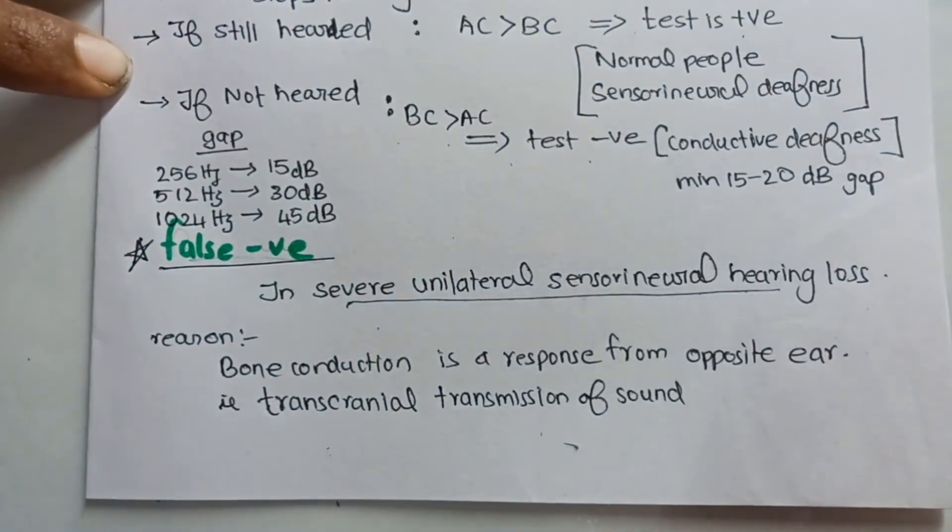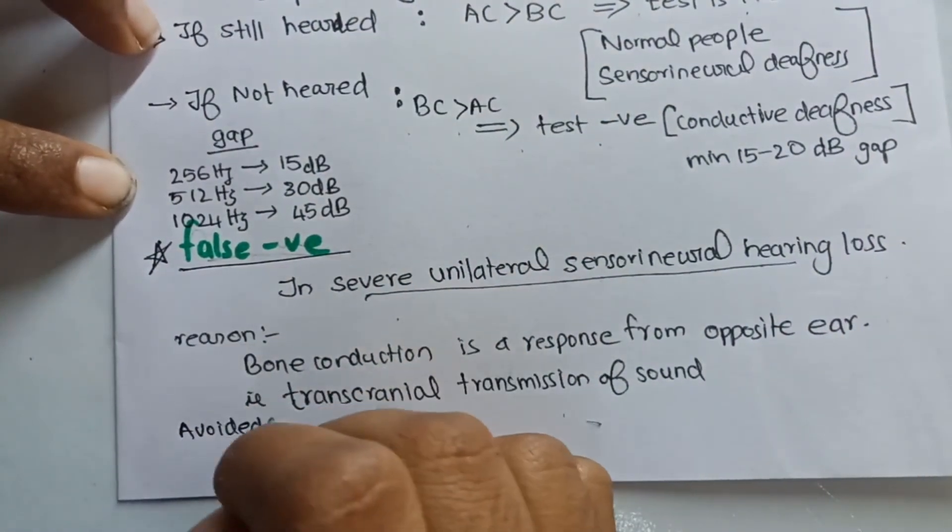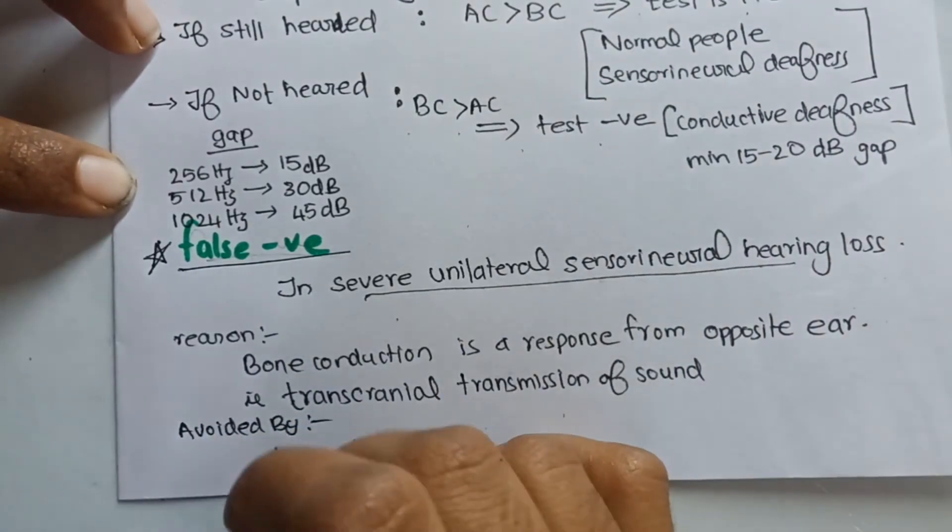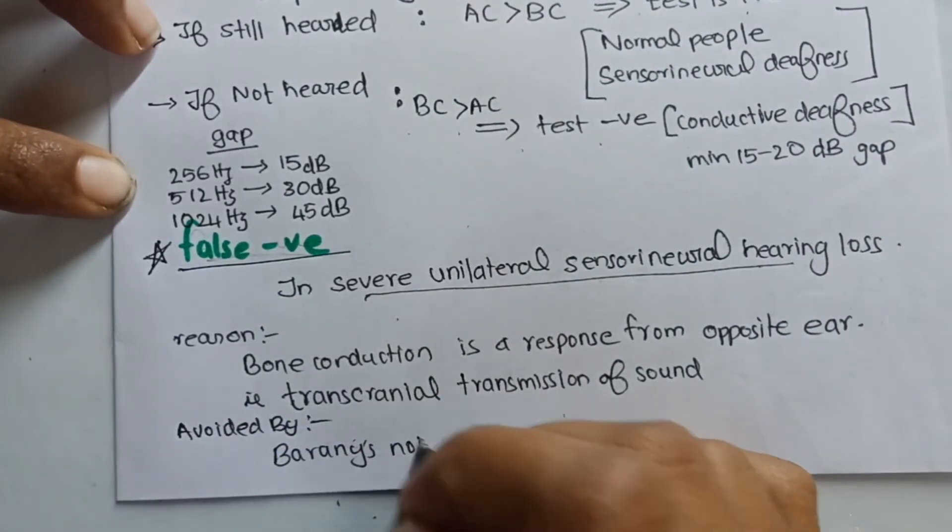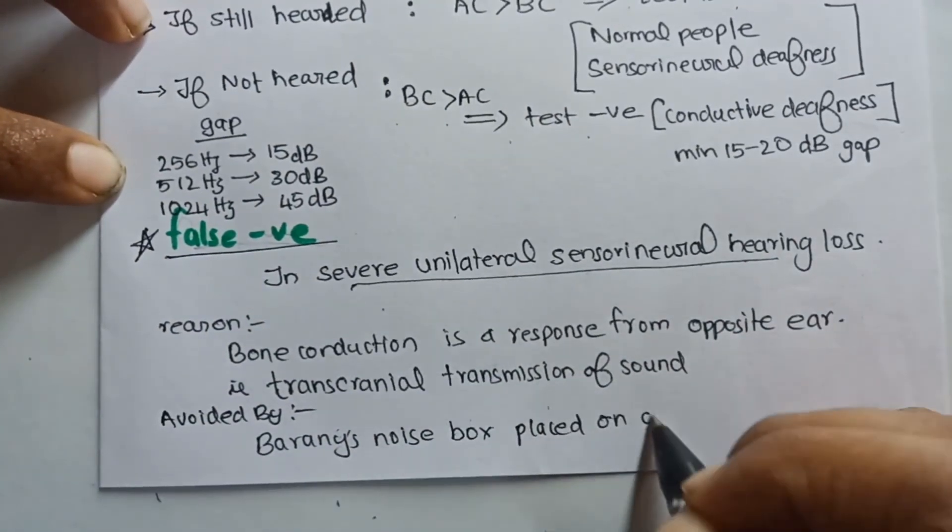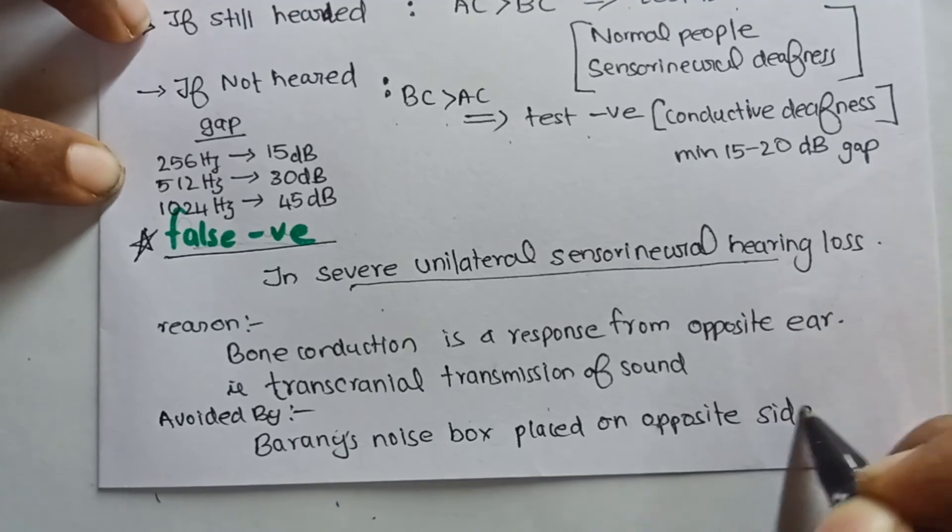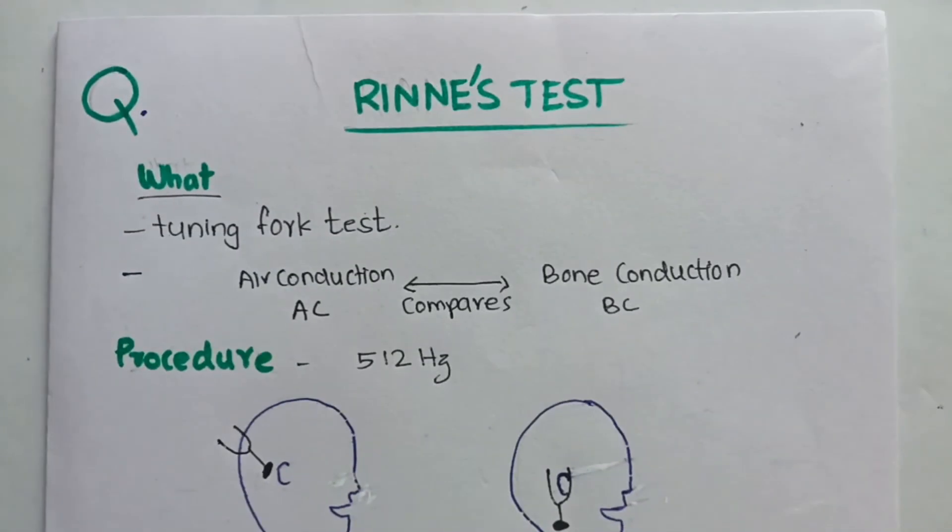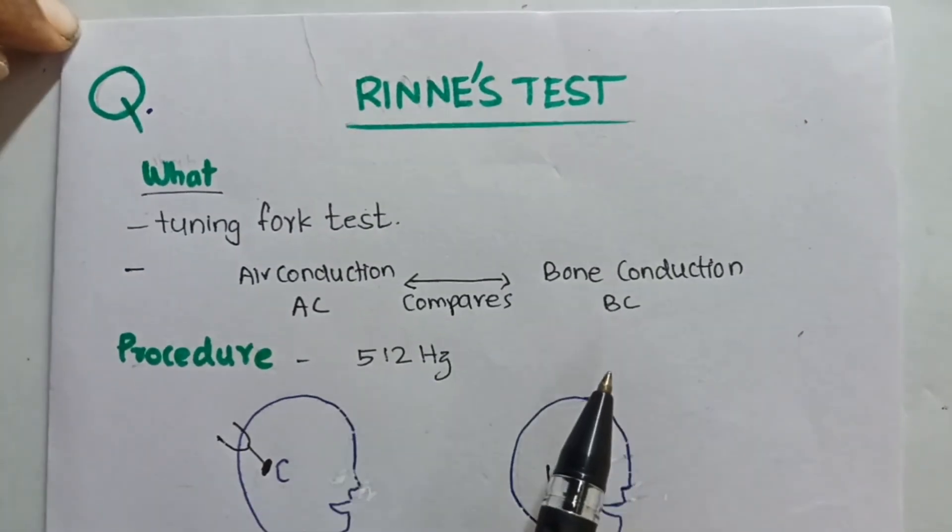Now how to avoid it? The false negatives can be avoided by using what is known as a Barany noise box on the opposite ear. This avoids any false negative by transcranial transmission. So that's all for Rinne's test.